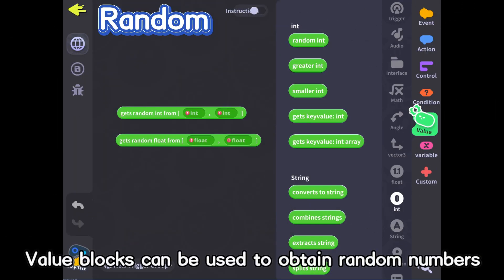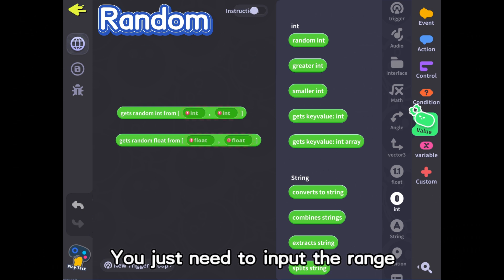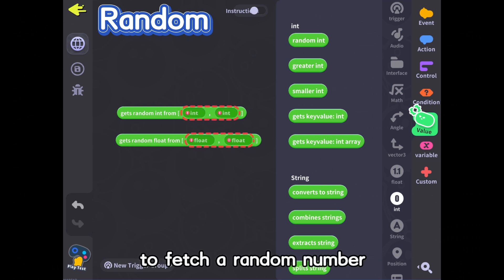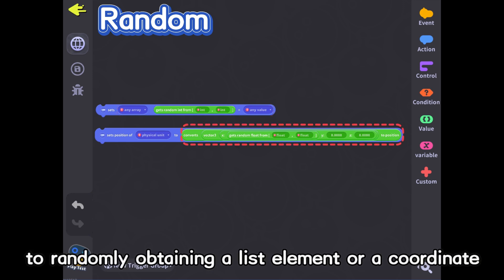Value blocks can be used to obtain random numbers, such as with random float and random int. You just need to input the range to fetch a random number. This function can also extend to randomly obtaining a list element or a coordinate.